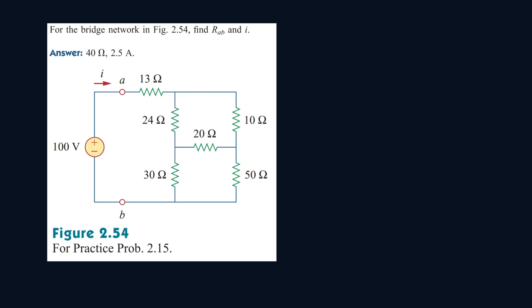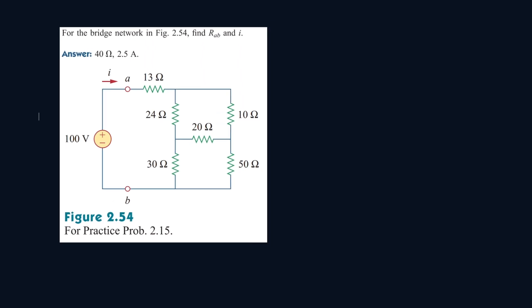For this one, we have to find the resistor equivalent between terminals AB and then find I. This circuit is not easy to simplify to get the resistor equivalent, so we're going to do the triangle-to-Y method.